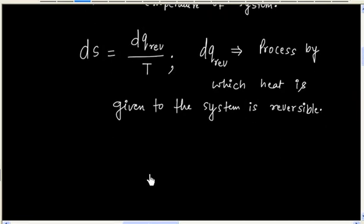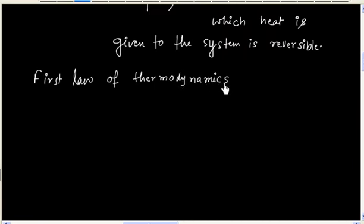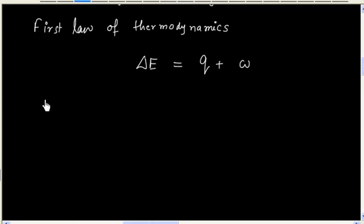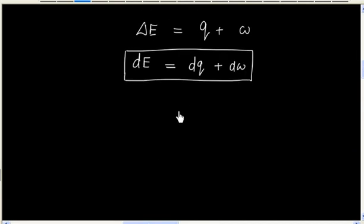Now let us apply the First Law of Thermodynamics. We have delta E equals Q plus W. We can write the same formula for a small quantity: dE equals dq plus dW. From here we can write dq equals dE minus dW.